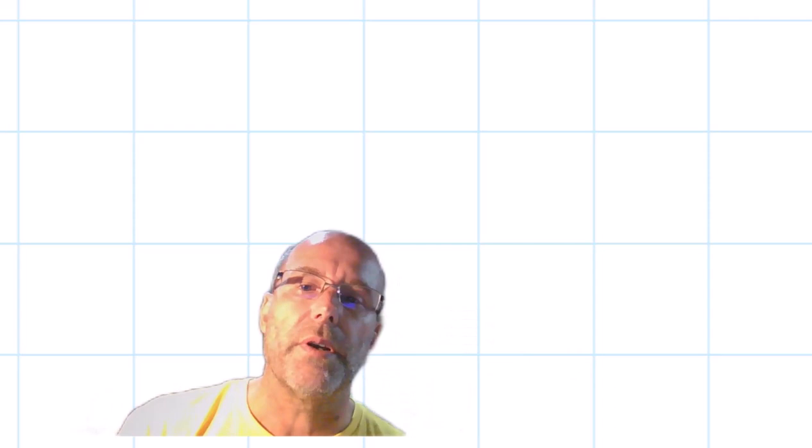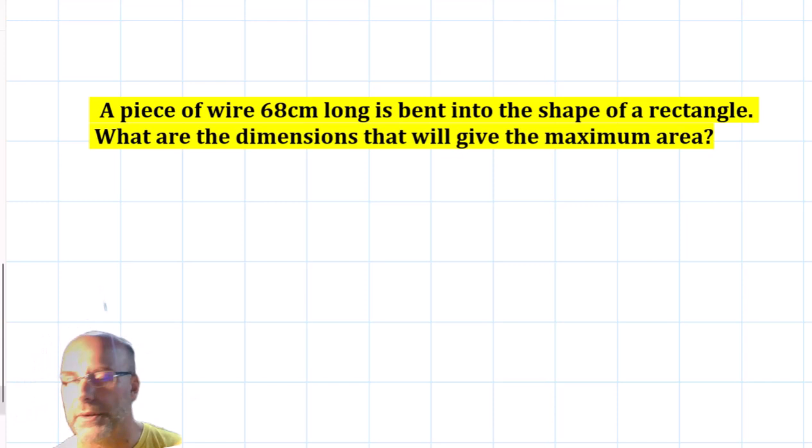So here we've got a piece of wire 68 centimeters long. We're going to bend it into the shape of a rectangle, and what are the dimensions that will give the maximum area? And we might as well find out what that maximum area is anyway. So how can we go about it?